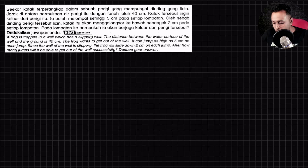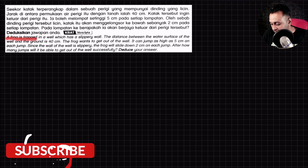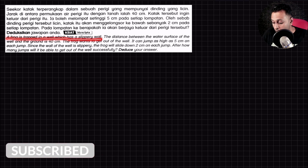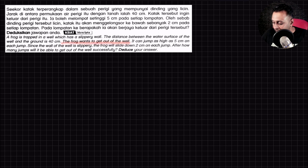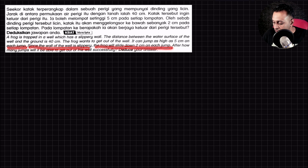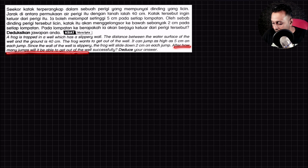So have you got the answer? Now let's go through this question together. The question says: a frog is trapped in a well with a slippery wall. The distance between the water surface and the ground is 40 cm. The frog wants to get out — it can jump as high as 5 cm on each jump, but since the wall is slippery, the frog will slide down 2 cm after each jump. After how many jumps will it be able to get out of the well successfully?